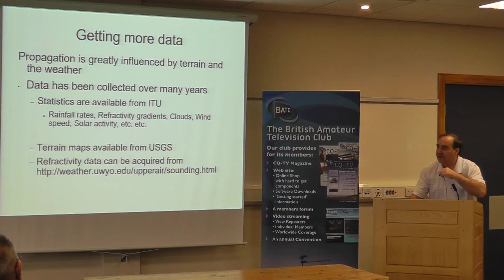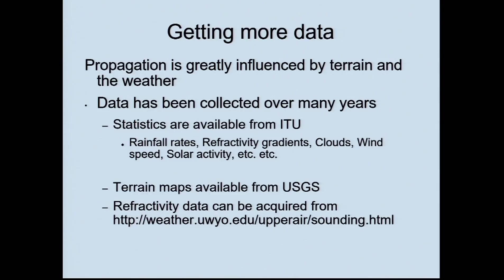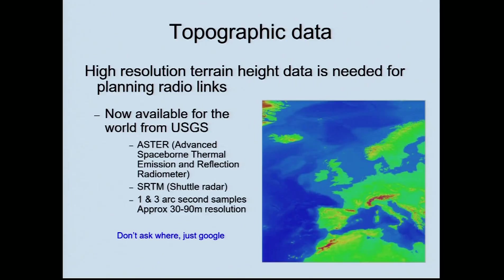High resolution terrain height data is needed for planning your links. It's now available for the whole world. There's the Advanced Spaceborne Thermal Emission and Reflection Radiometer — a space-based passive measurement — which gives you down to three arc seconds, about 90-metre resolution. And SRTM, the Shuttle Radar Tomography Mission, gives you 1 to 3 arc seconds — that's 30 to 90-metre resolution. The final comment: don't ask me where, just Google it. That's the easiest way to find these things. And that was it.